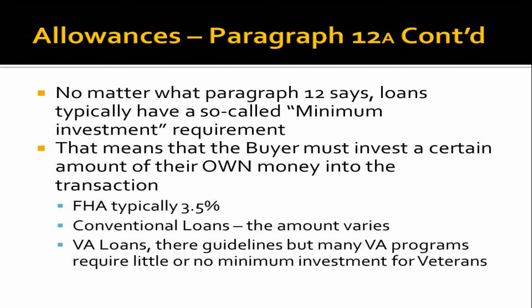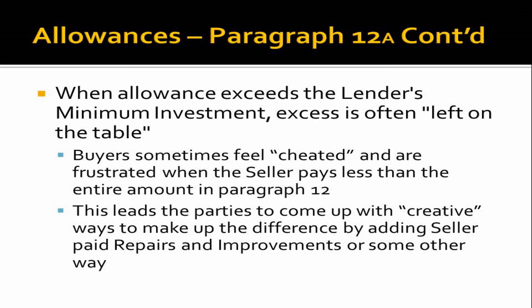Almost all loans have a so-called minimum investment requirement — the buyer must invest a certain minimum amount of their own money, not seller contributions. For example, FHA typically has a 3.5% minimum contribution. In conventional loans, that amount varies depending on the program, loan-to-value ratio, and other factors. In VA loans, there are some guidelines but many VA programs don't require a minimum investment and will loan the veteran pretty much 100% in many cases.